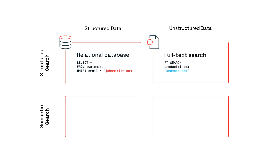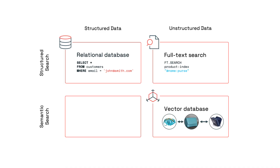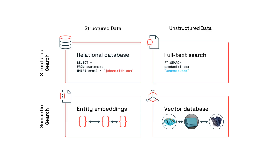Unstructured data with semantic search: take images or natural language and convert them into embeddings, then compare the embeddings. The star here is, of course, vector databases, which store embeddings and match them using metrics like cosine similarity or Euclidean distance. The last quadrant — structured data with semantic search — is one that you might not have heard of: entity embeddings. An entity embedding is structured data like JSON, i.e. the entity, that has been run through an AI model to encode the semantics of that data into an embedding. This isn't that common, but certainly interesting.